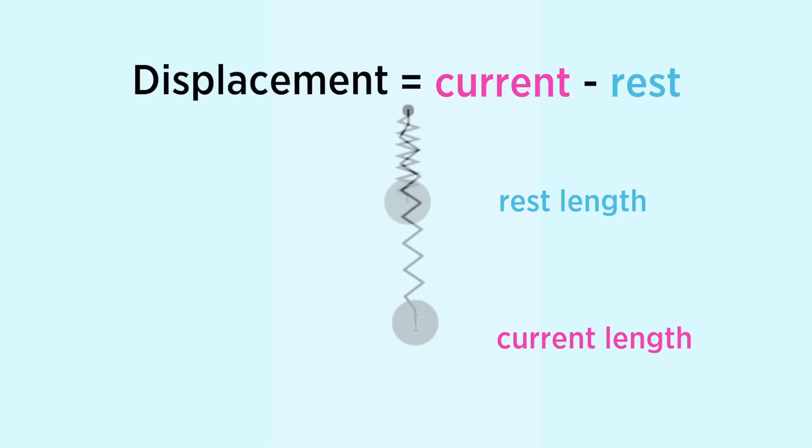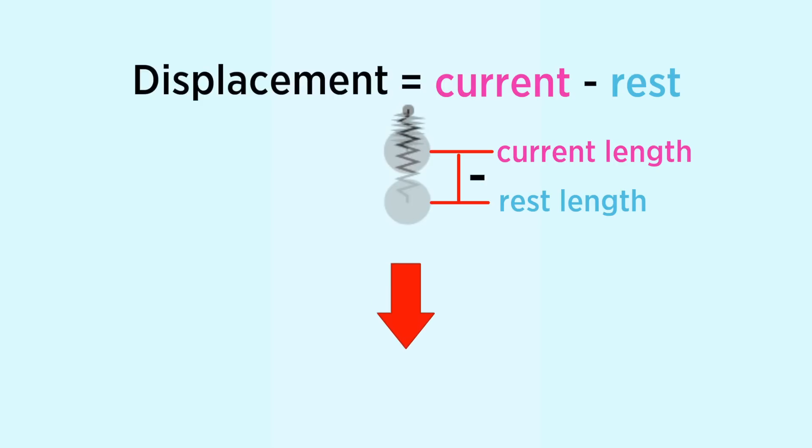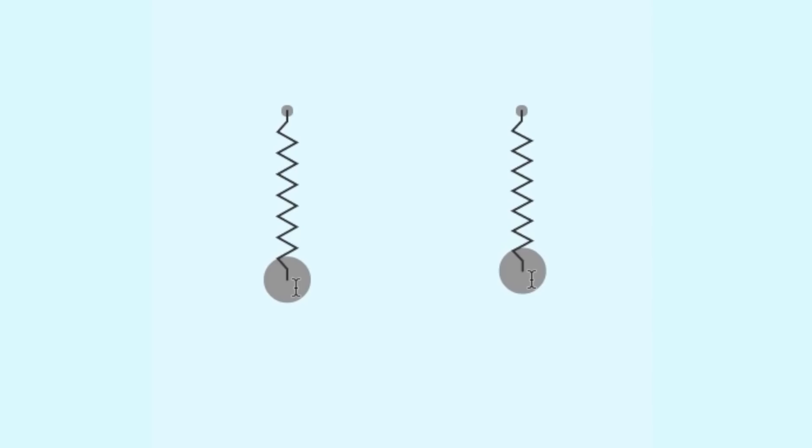When we compress a spring, the displacement is negative and the resulting spring force is positive. This is called the push force. So Hooke's observation was quite simple.